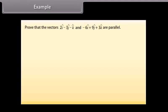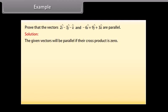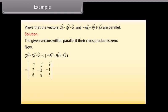Example: Prove that the vectors 2 cap I minus 3 cap J minus cap K and minus 6 cap I plus 9 cap J plus 3 cap K are parallel. Solution: the given vectors will be parallel if the cross product is zero. The cross product equals the determinant with first row cap I, cap J, cap K; second row 2, minus 3, minus 1; third row minus 6, 9, 3, which equals (minus 9 plus 9) cap I plus (6 minus 6) cap J plus (18 minus 18) cap K equals zero vector. Hence proved.